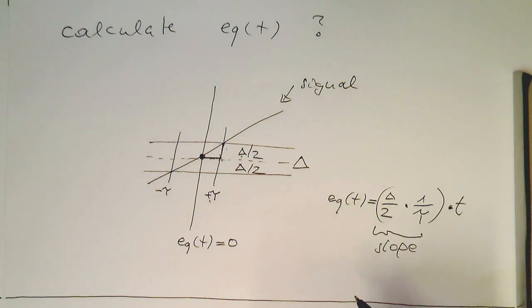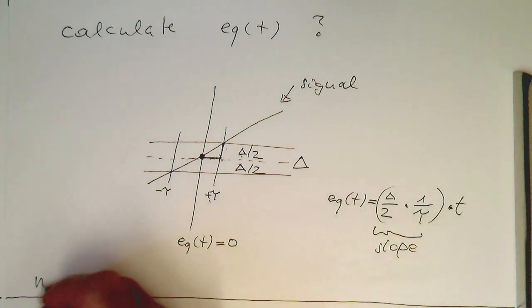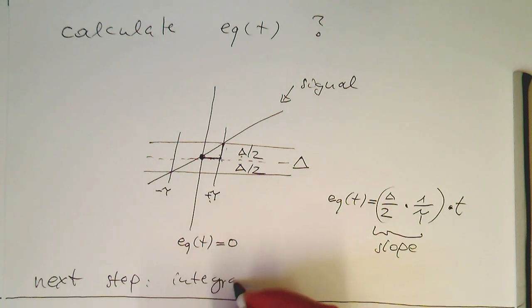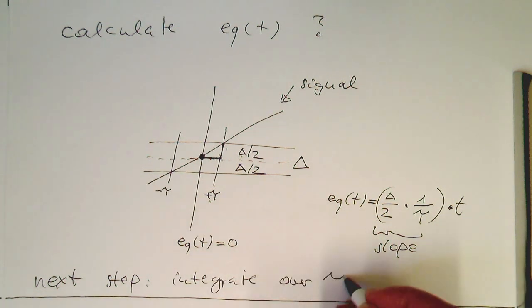So now what we would like to do in the next step is integrate over tau to get an average.